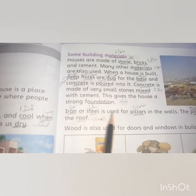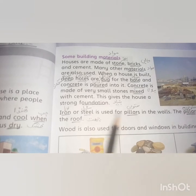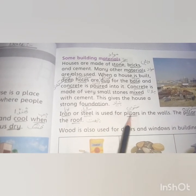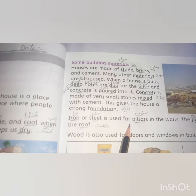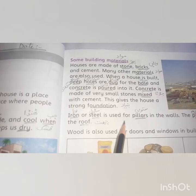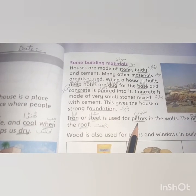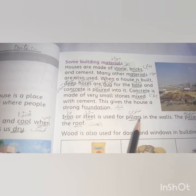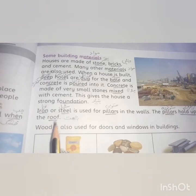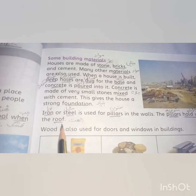Iron or steel is used for pillars in the walls. Steel is mostly used; first pillars are made with steel, then concrete and cement mixture is applied around them to form the pillar, so that the walls are strong. The pillars hold up the roof.